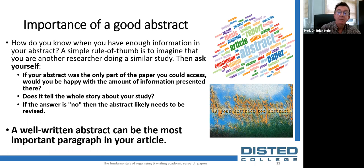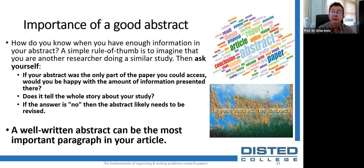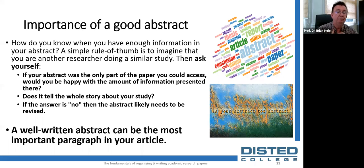How do you know if you've written enough in your abstract? The general rule of thumb is to imagine standing in someone else's shoes and ask two questions: if your abstract was the only part of the paper they could access, would you be happy with the amount of information presented? And is there sufficient information in the abstract for them to cite you?